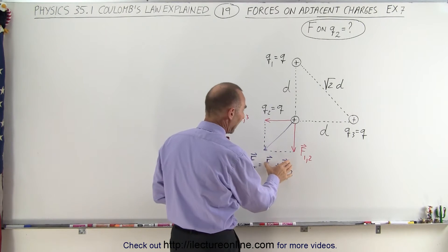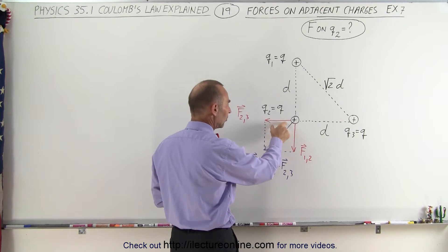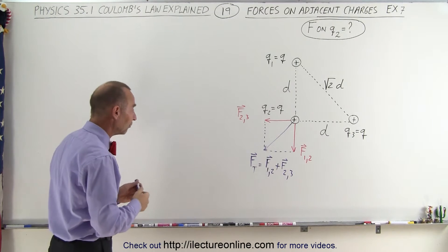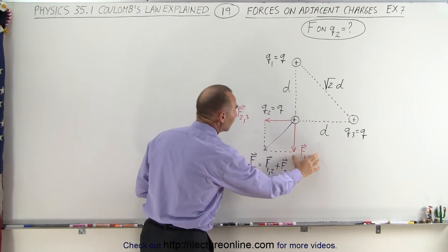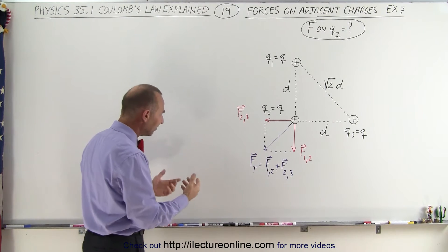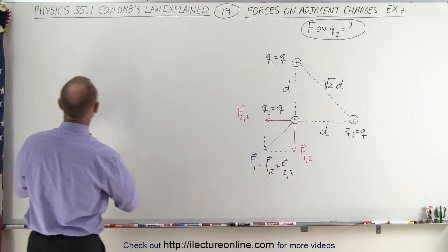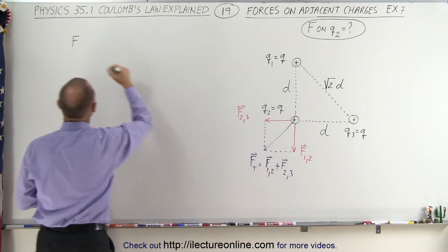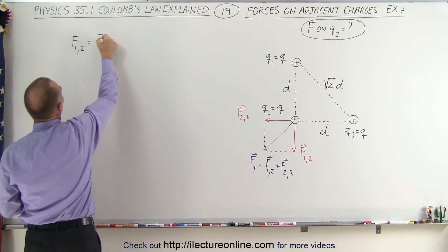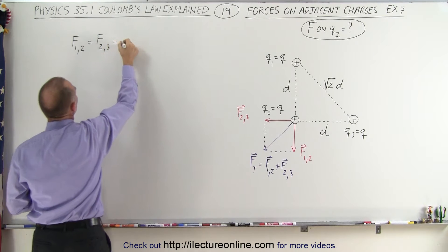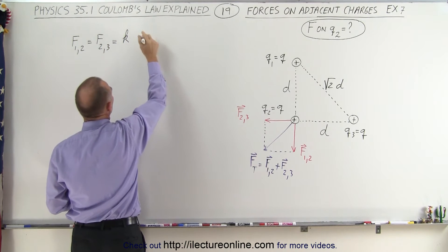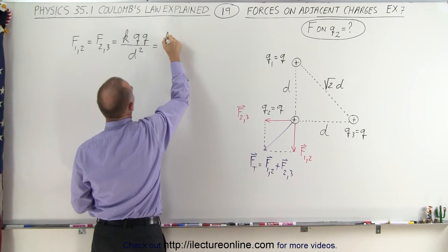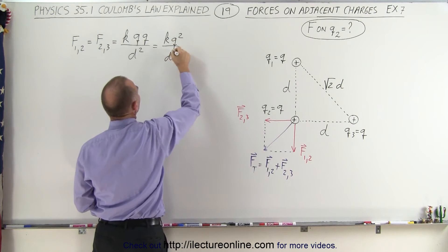In this case, notice that we don't have to find the components because F12 only has a Y component and F23 only has an X component. So we can go ahead and put it in its final form as soon as we find the magnitude of these two forces. Since the distances are the same, the magnitudes are going to be the same. The magnitude of F between 1 and 2 will be the same as the magnitude of force between 2 and 3, which is equal to K times the product of their two charges — Q times Q — divided by the distance between them squared. So this will be KQ² divided by D².